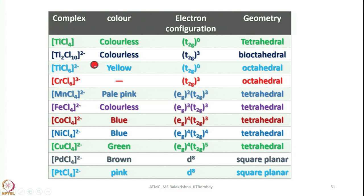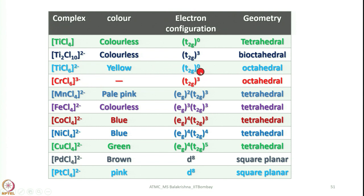When you go to Ti2Cl10 dianion, it is also colorless with a d3 configuration, and it is octahedral. For hexachlorotitanate, this is yellow in color — again Ti is d0, but the yellow color arises from a charge transfer transition. This is where backbonding can be seen, and in this case it is octahedral.